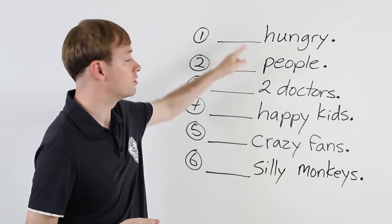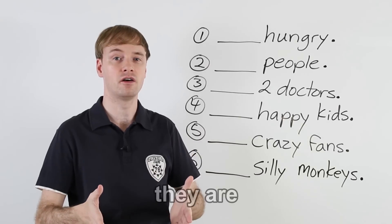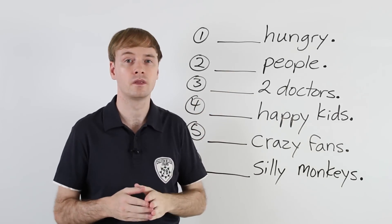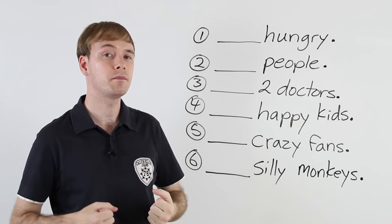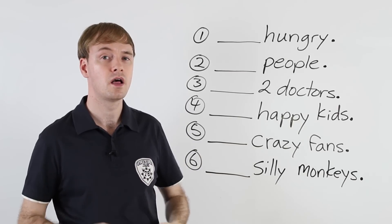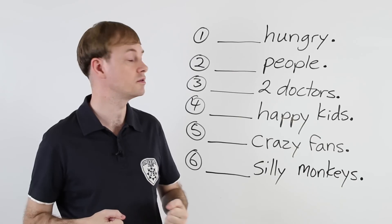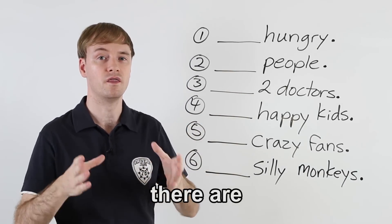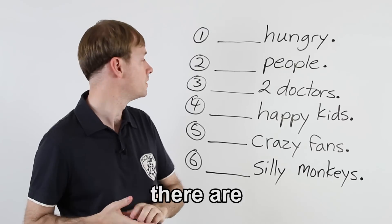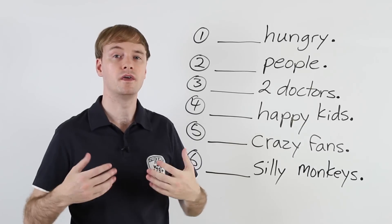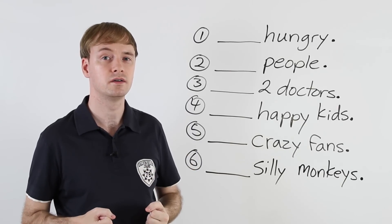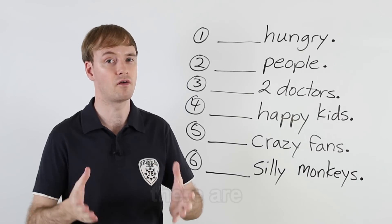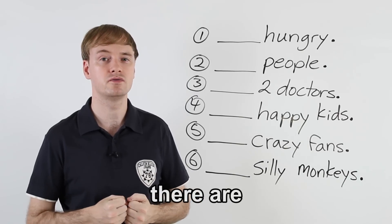Number one should be 'they are' — they are hungry. Number two: there are people. There are people — so number two is 'there are.' Number three: there are two doctors. There are two doctors — that's 'there are.'